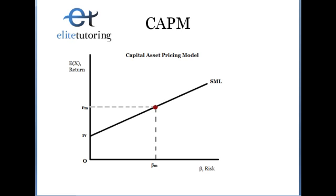In finance problems, we are often trying to decide whether or not to accept a project. We use different discount rates or required rates of return to help us make a decision. The CAPM model will give us that required rate of return that we use as our discount rate, and I'll explain more about that later.